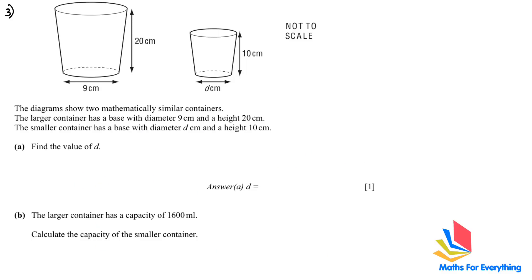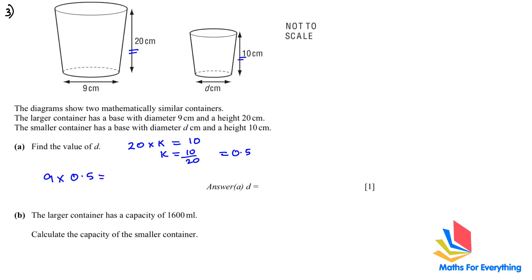In question 3 we have been given a diagram, which makes things much easier. The diameter is 9 and the height is 20. Both containers are similar. Find the value of d. The first thing we need to do is find the scale factor: 20 and 10 are corresponding sides, so k equals 10 divided by 20, which is 0.5. To find d we multiply 9 by 0.5 and get 4.5 centimeters. So d is 4.5.